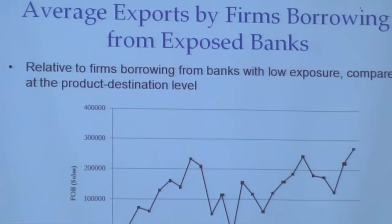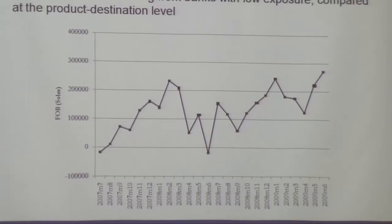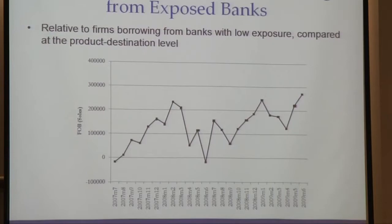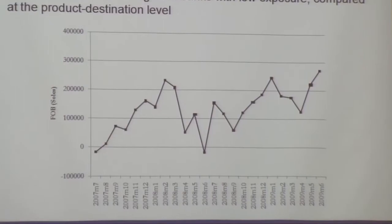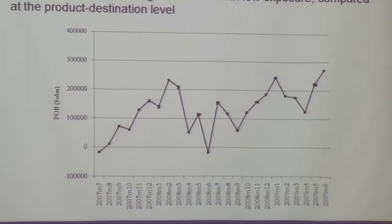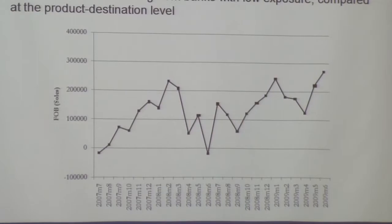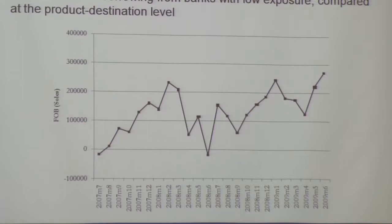The second plot shows average exports by firms borrowing from the exposed banks relative to average exports of firms not exposed, compared product-destination by product-destination. Because the numbers are relatively small — since we're comparing within a product destination, not aggregate numbers — you can see a very similar pattern to the lending plot. Exports grow all the way up to mid-2008, there is a sharp decline, and then they continue growing again. This is what we interpret as the effect of the negative credit supply shock on the exports of these firms.